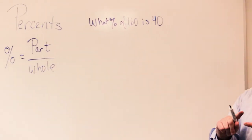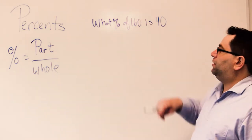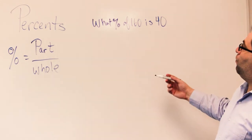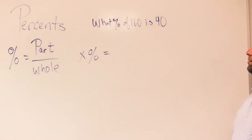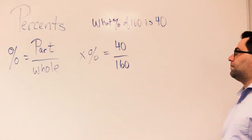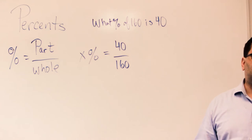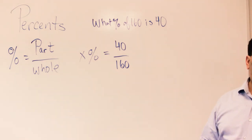One way that you'll see these questions posed is like this: what percentage of 160 is 40? We have to use our ratio relationship. We just need to know what's the percentage, what's the part, what's the whole. Whatever you're taking the percentage of is going to be the whole. We take a percentage of a total to get a part. So I know I'm missing the percentage — let's make that x. The whole is 160 and the part is 40.